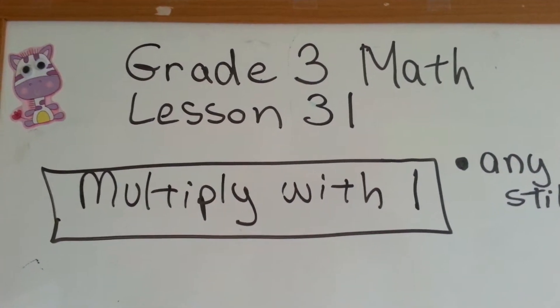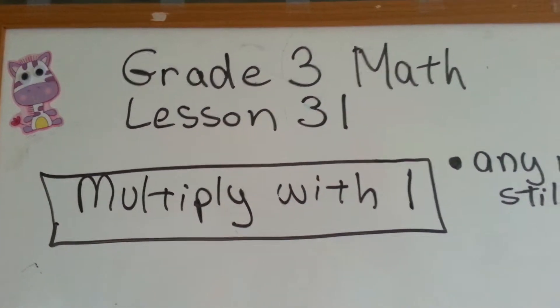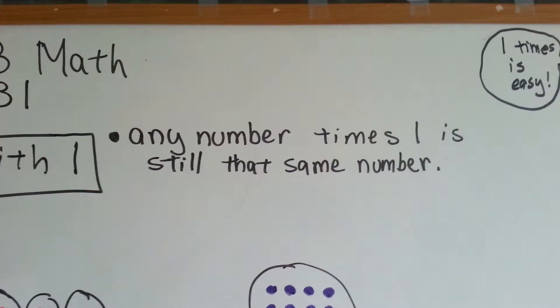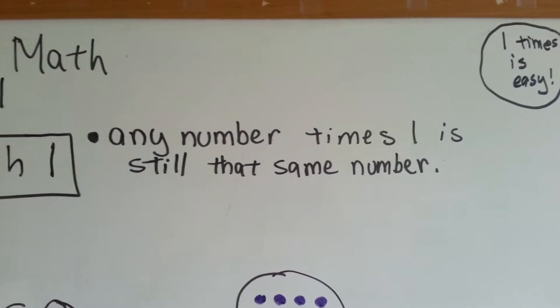Grade 3 Math, Lesson 31, Multiply with 1. Any number times 1 is still that same number.